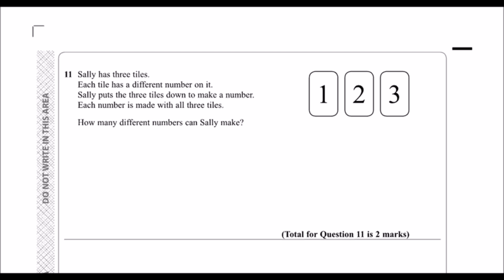Question 11. Sally has three tiles. Each tile has a different number on it. Sally puts the three tiles down to make a number. Each number is made with all three tiles. How many different numbers? So she's going to reorder these tiles. How many numbers can she make?